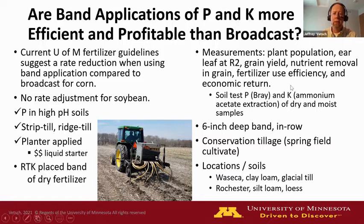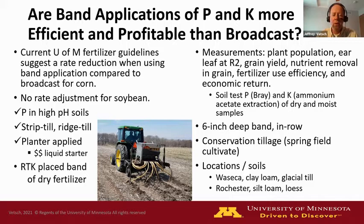In this study we looked at grain yield, ear leaf P and K nutrient concentrations, and soil test comparisons. This was a band versus broadcast side-by-side study with a wide range of soil tests. The band was applied with a small plot applicator about six inches deep, right where the row was going to be — the fertilizer was about four inches below the seed. This was a conservation tillage system; we came back in spring with a field cultivator pass shallow enough not to disturb the band. We had two locations: Waseca (clay loam glacial till) and Rochester (silt loam loess soil).